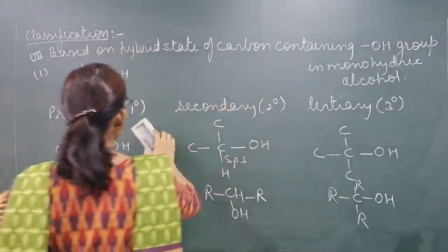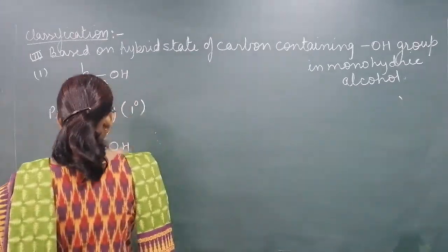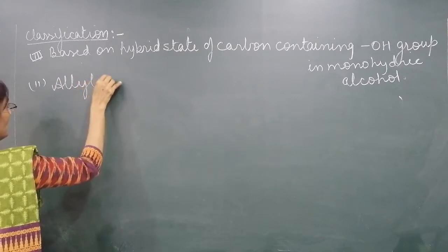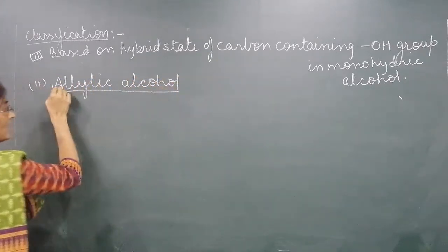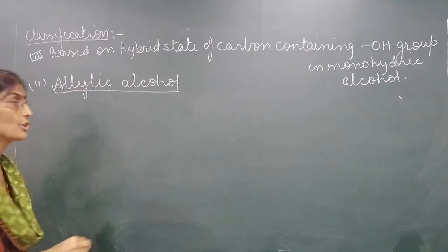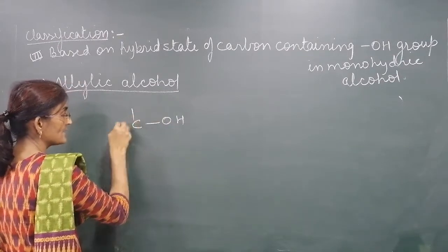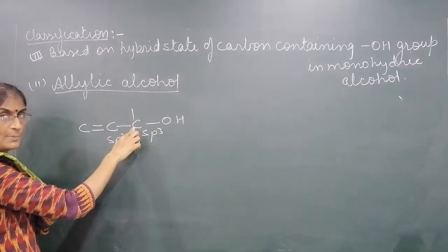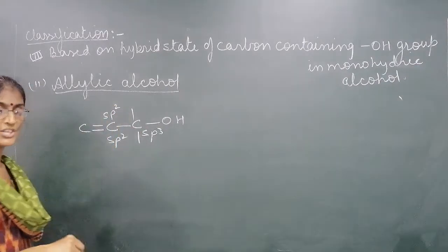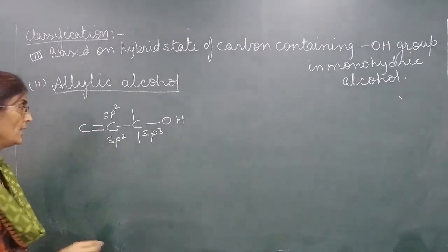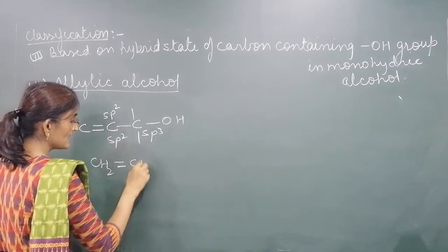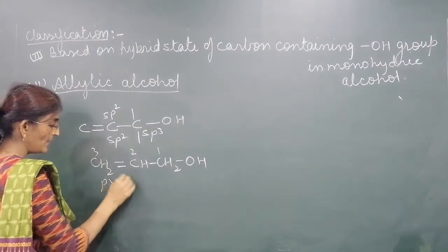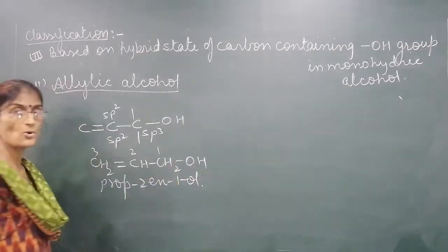The second type of classification for SP3 hybridized carbon is Allylic alcohol. What is Allylic alcohol? These are alcohols in which the OH-containing carbon is SP3 hybridized, but its neighboring carbon is SP2 hybridized. Such alcohols are known as Allylic alcohol. For example, CH2=C-CH2OH — this is called Allylic alcohol, and its name is prop-2-en-1-ol.